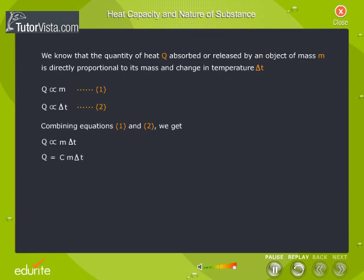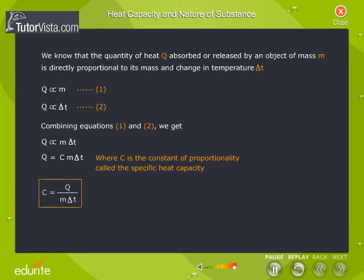Therefore, Q is equal to C times M times Delta T, where C is the constant of proportionality called the specific heat capacity. C is equal to Q divided by M Delta T. The unit of specific heat capacity is joules per kilogram degree Celsius.